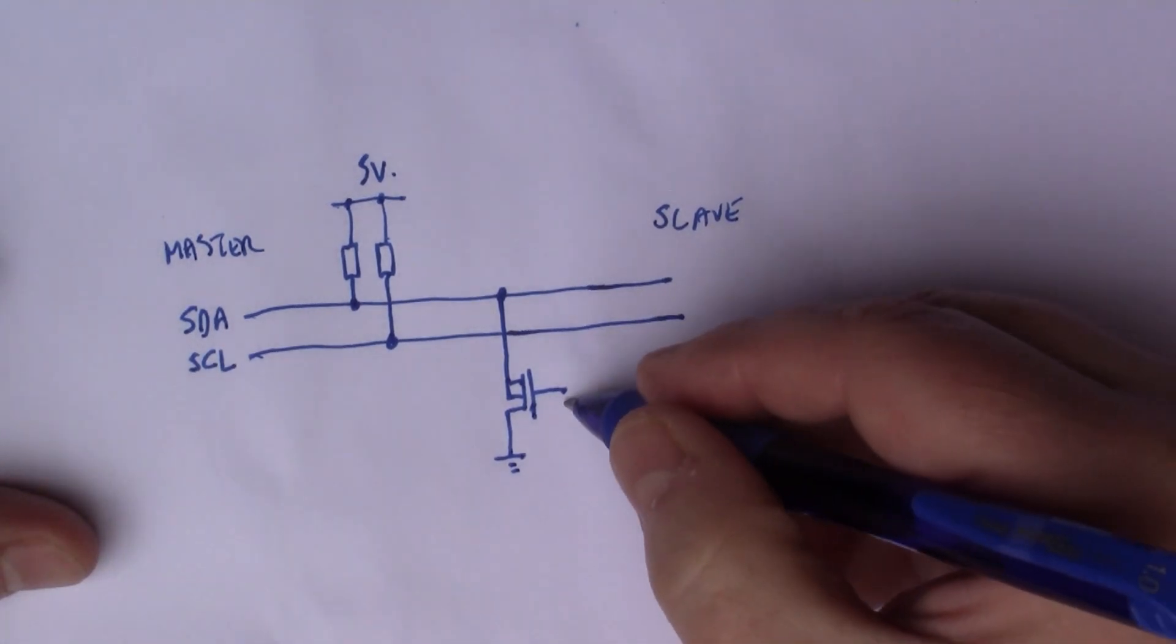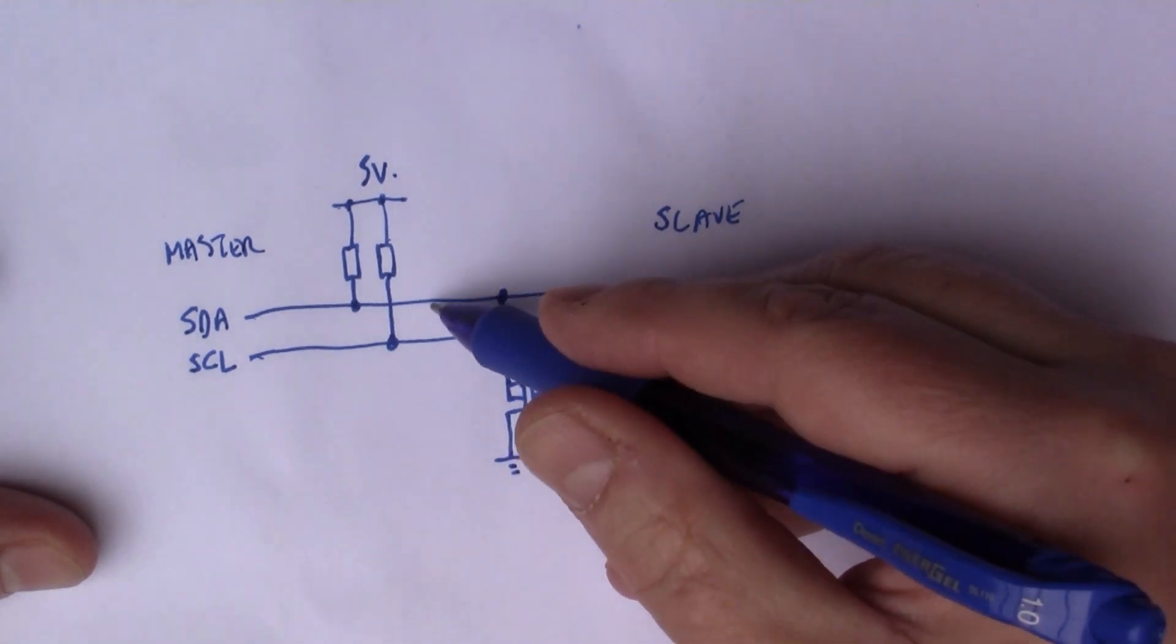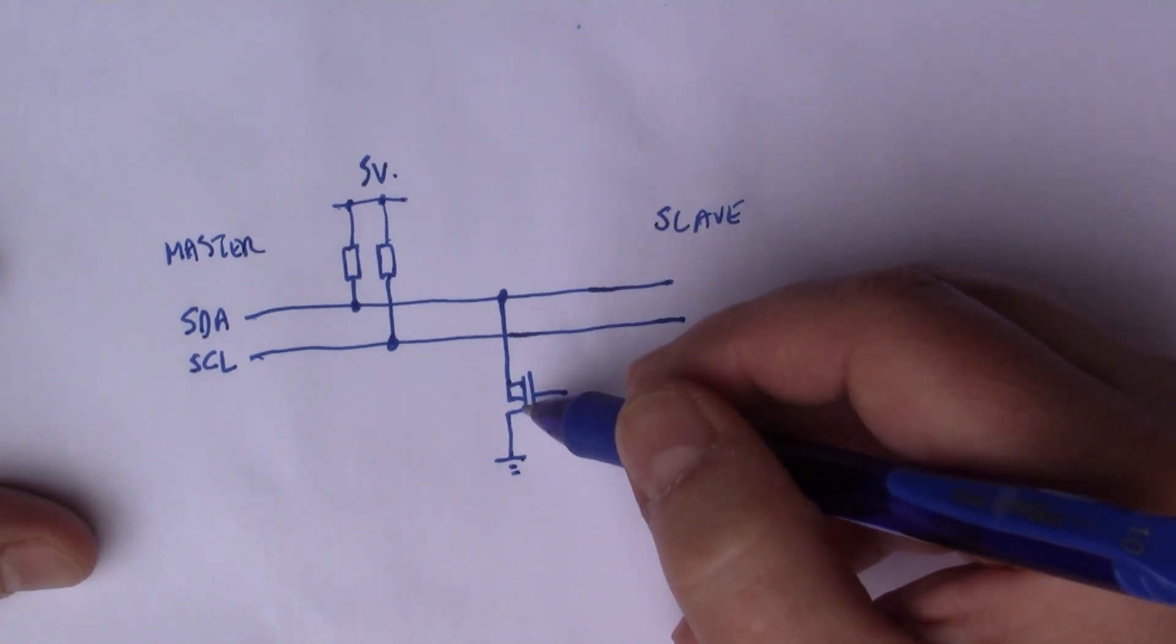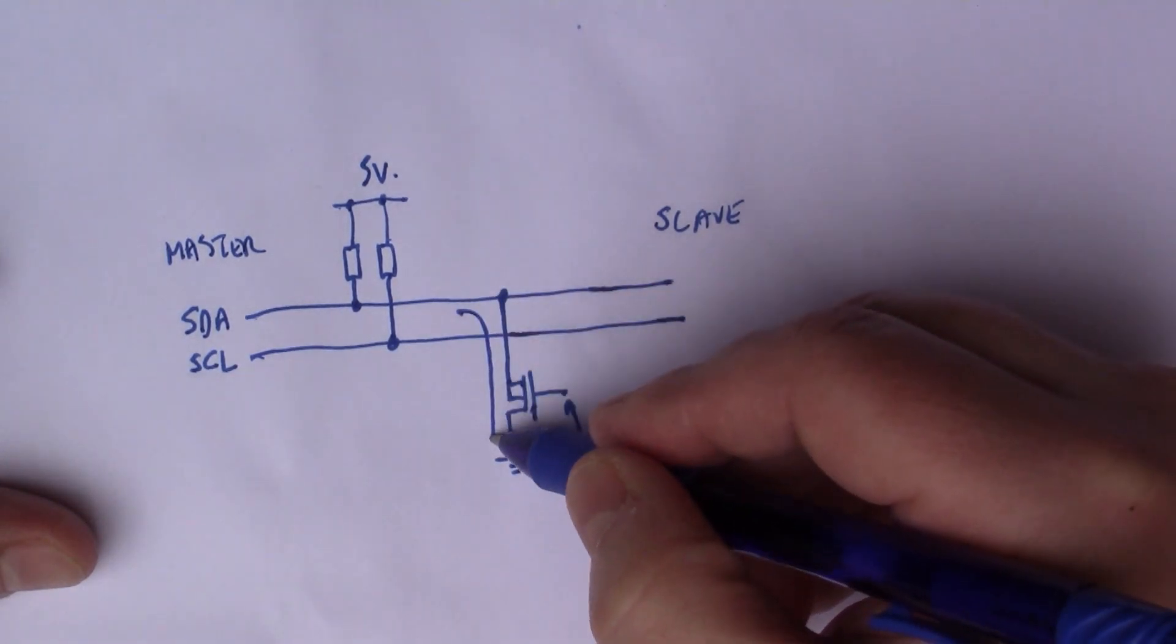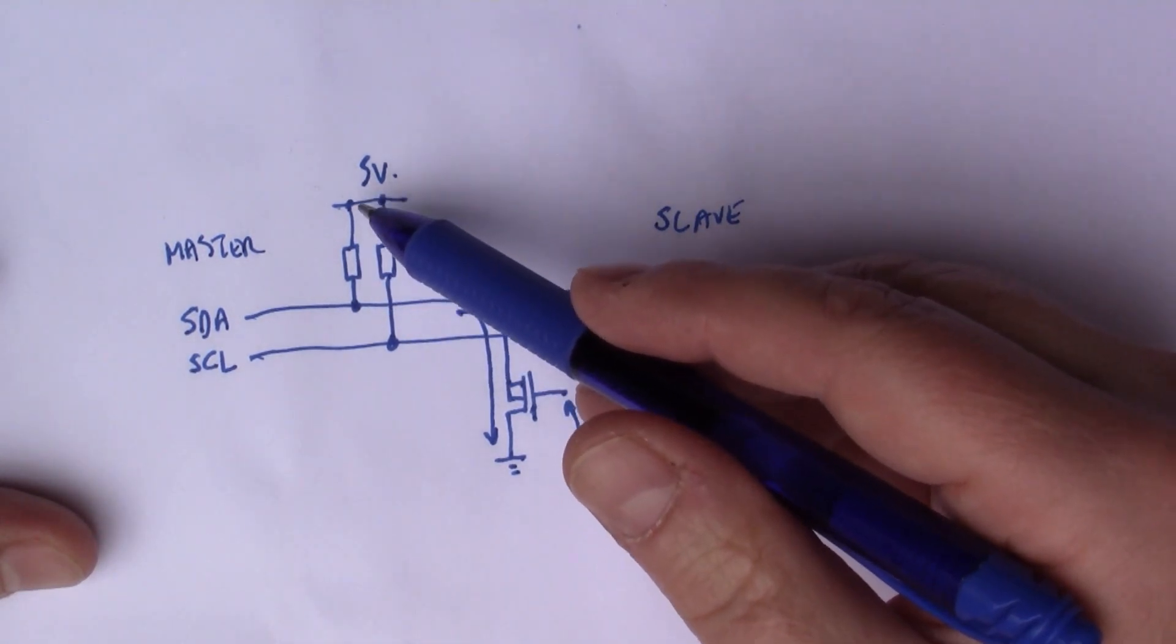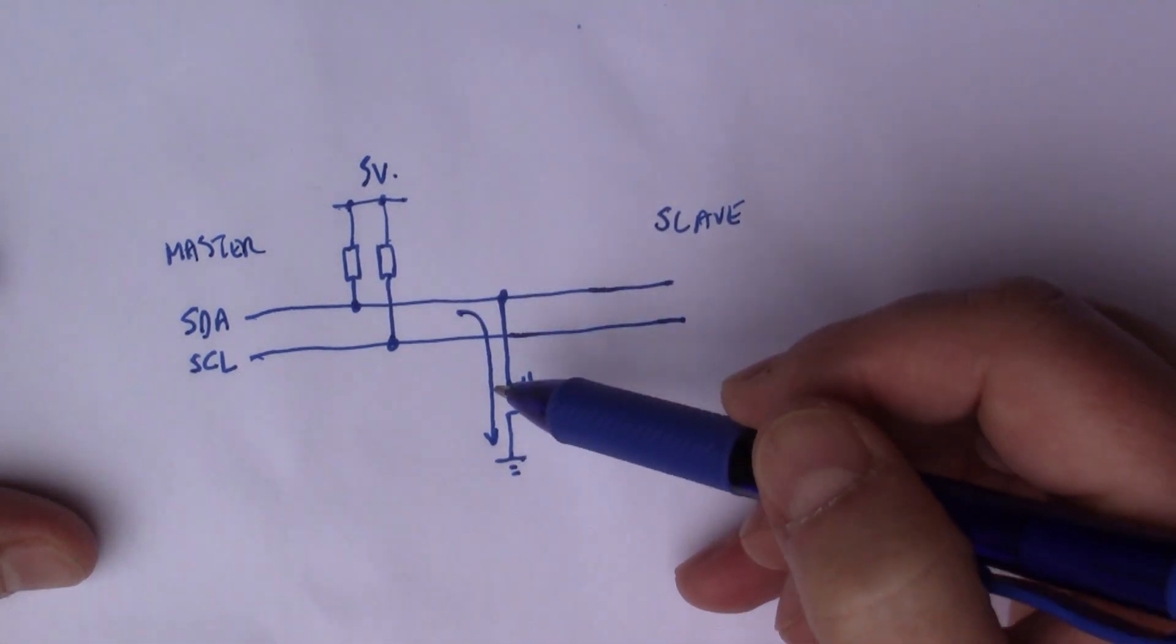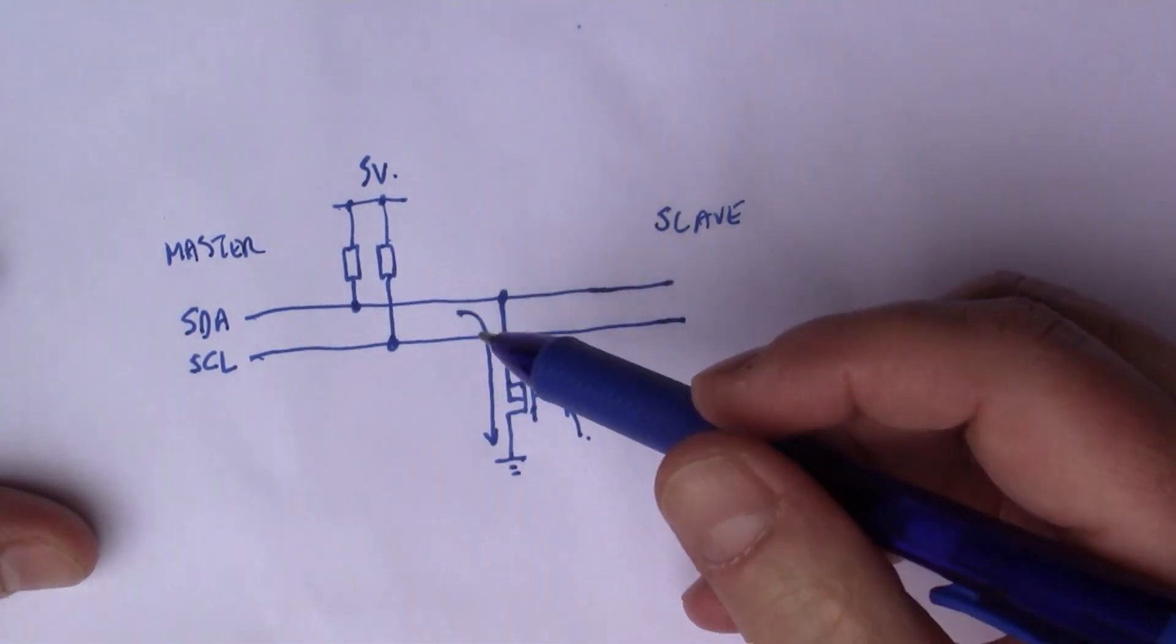Inside the slave there's typically a MOSFET. The device does its switching by having a MOSFET pulling down to ground. The line is floating high all the time, but when the slave wants to signal something, it switches on the gate of the MOSFET and the SDA line becomes zero volts. The pull-up resistor limits the current flowing from five volts through the MOSFET to ground.